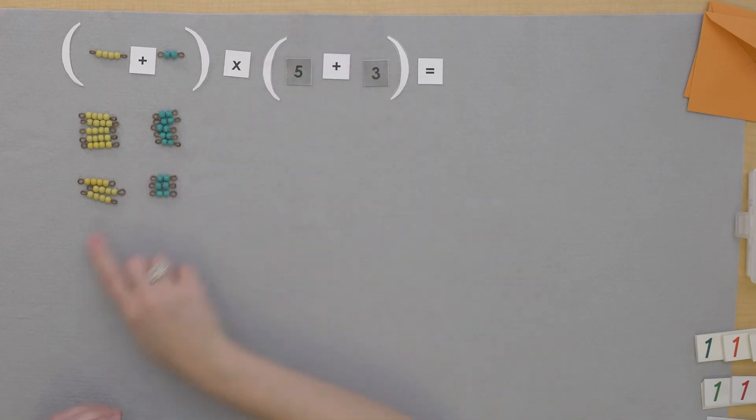Let's find the products of each of these. So four five times is 20, two five times is 10, four three times is 12, and two three times is 6.